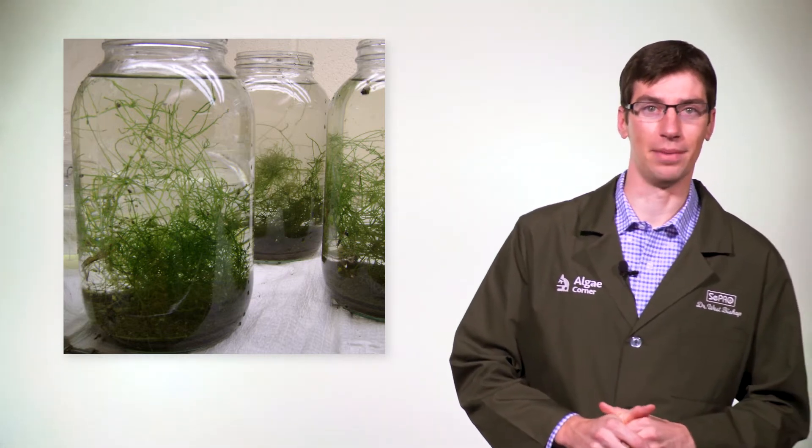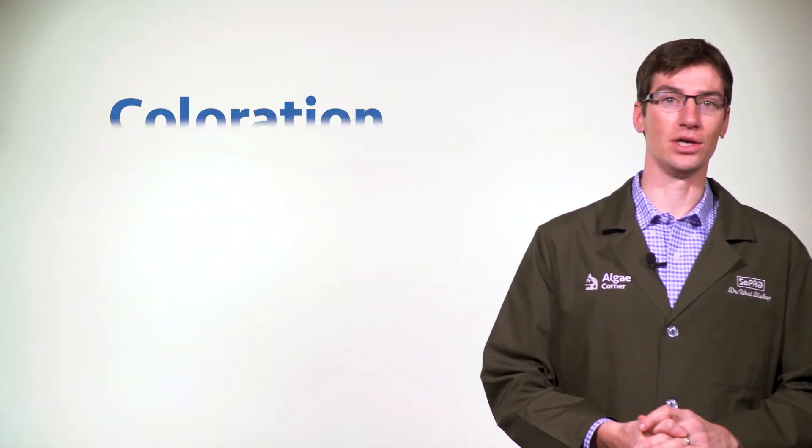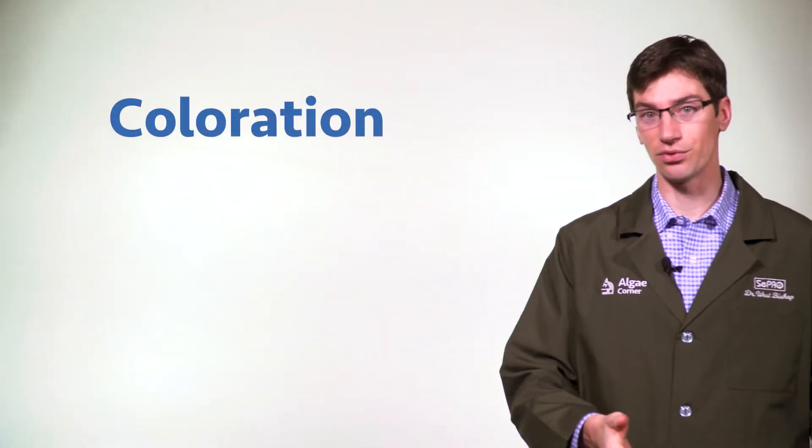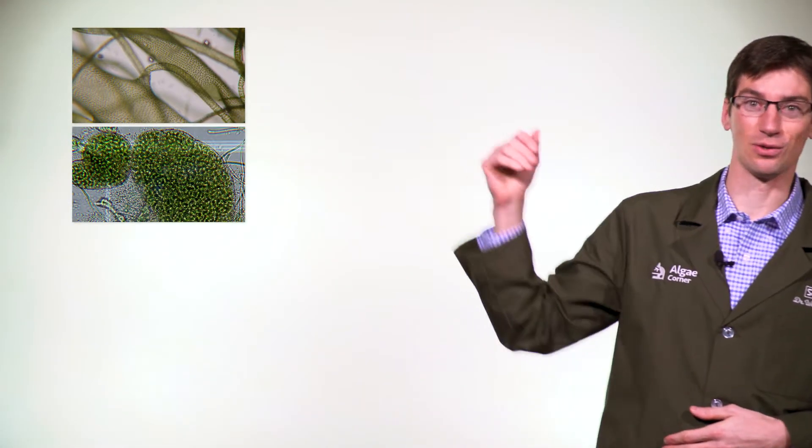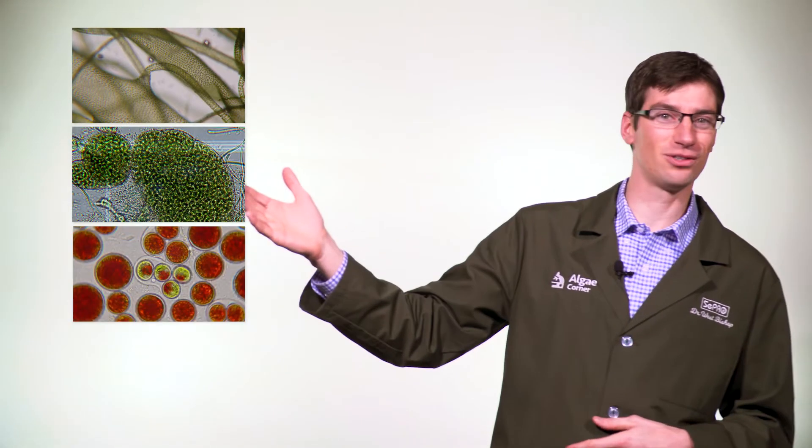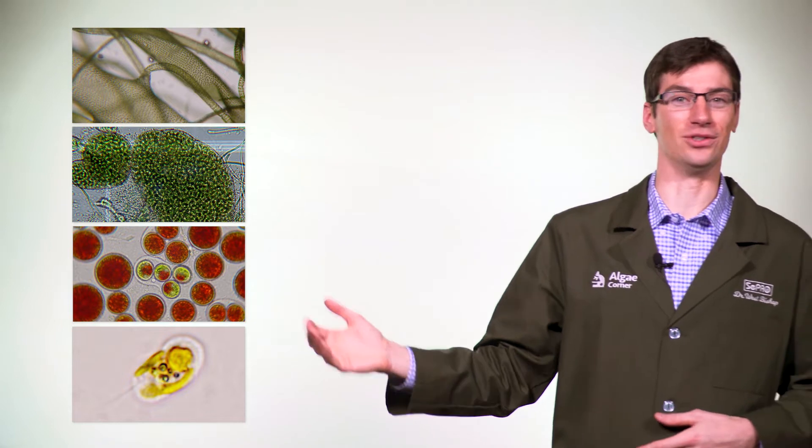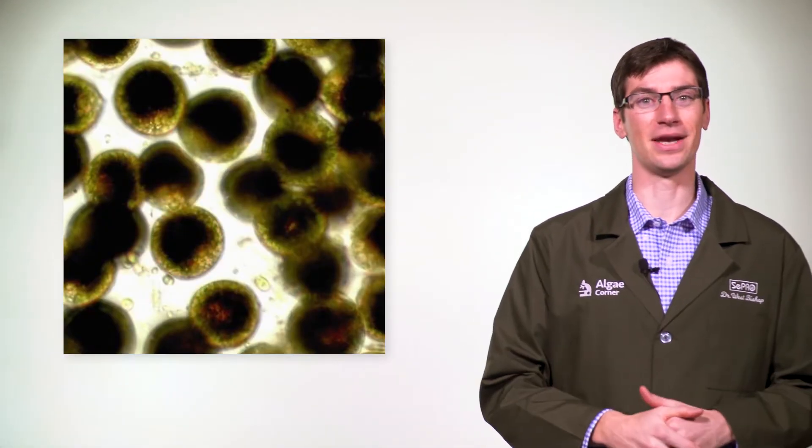Another important diagnostic clue is looking at the coloration of the algae. Different algae contain different pigments for attaining sunlight and energy through use of the sun's rays. There's green algae, blue-green algae, red algae, and even gold algae. They can have many different pigments that make them appear the way they are.